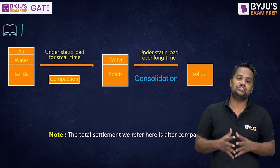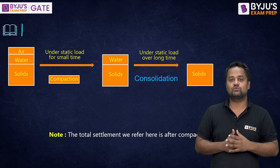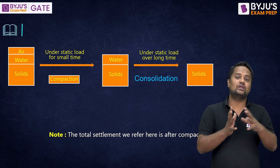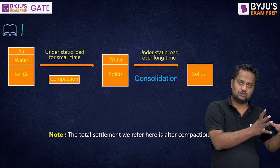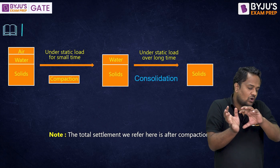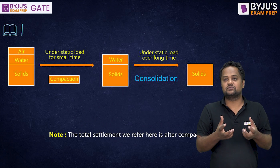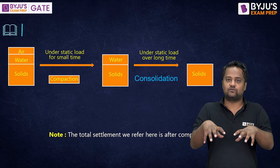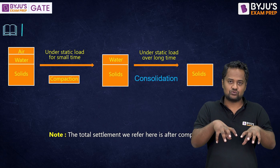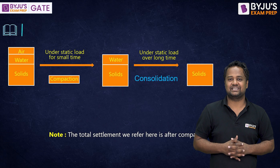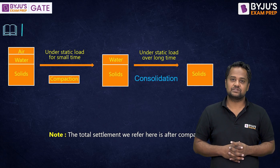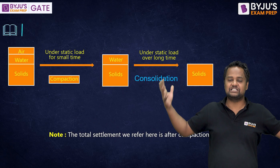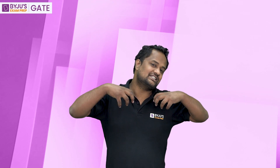So, if in a partially saturated soil we apply load, then initially the air voids will be reduced, and when all air voids are reduced — theoretically we assume all air voids are reduced — the soil becomes saturated. Then further application of load means all load is taken by the water, which comes under excess pore water pressure and starts dissipating out. Water dissipating out means reduction in volume — that is consolidation.